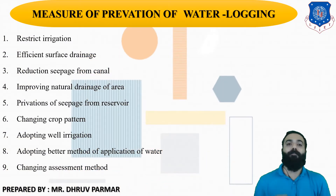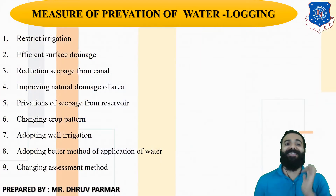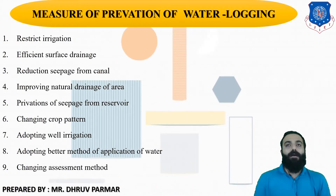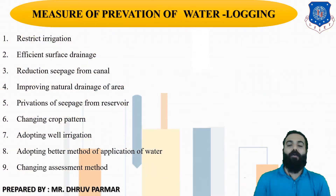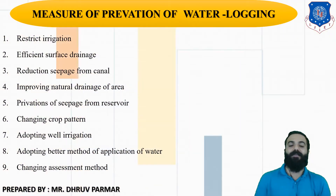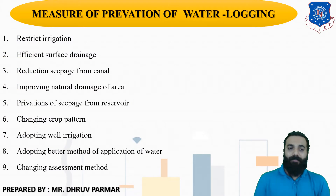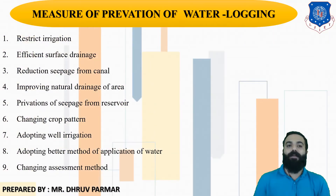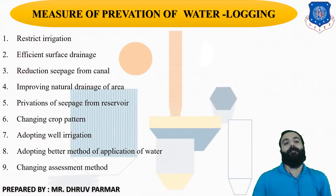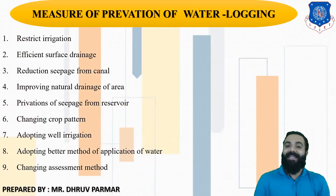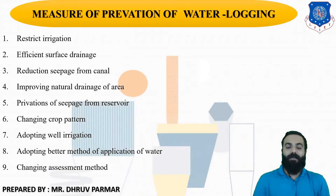There are some measures for prevention of waterlogging. The first is to restrict irrigation by using methods that minimize water use, such as drip irrigation and sprinkler irrigation. The second is efficient surface drainage — use a surface drainage system that is properly and effectively designed. The third is reduction of seepage from canals by using lined canals and applying protective layers to reduce seepage.